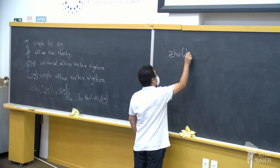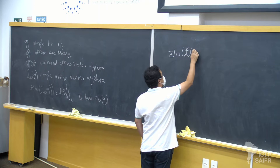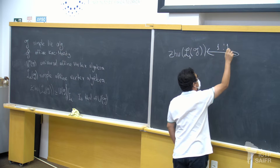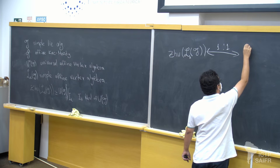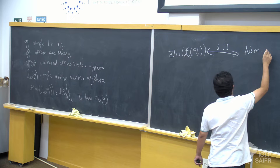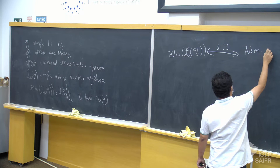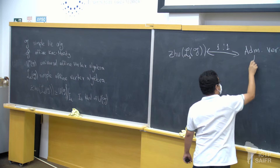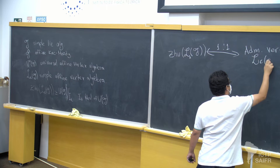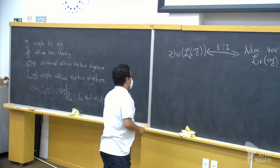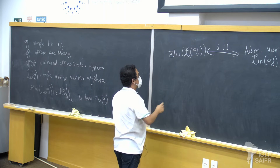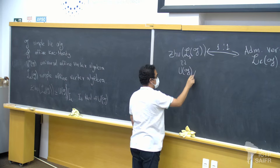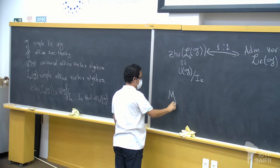We study the modules of this algebra for the admissible case. This is a strong problem. We need to describe the modules of g — that is, the g-module M.